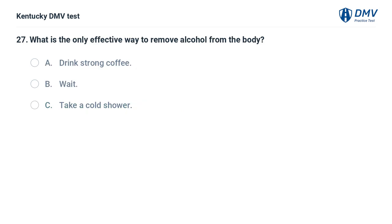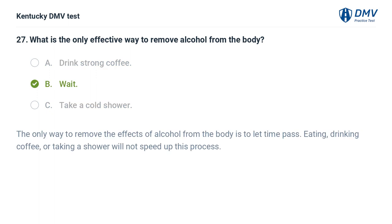What is the only effective way to remove alcohol from the body? A. Drink strong coffee. B. Wait. C. Take a cold shower. The correct answer is B, wait. The only way to remove the effects of alcohol from the body is to let time pass. Eating, drinking coffee, or taking a shower will not speed up this process.